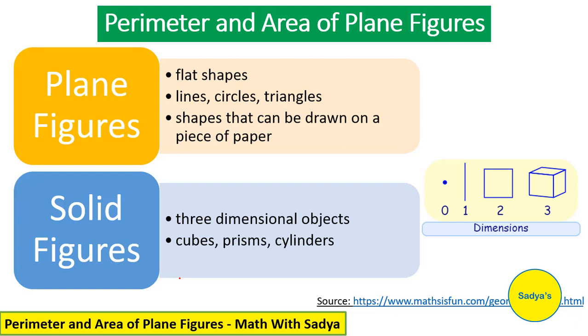The opposite is solid figures. Solid figures means that they are 3 dimensional objects. For example, cubes, prisms or cylinders. So the website mathsisfun.com has a very good illustration explaining the dimensions.